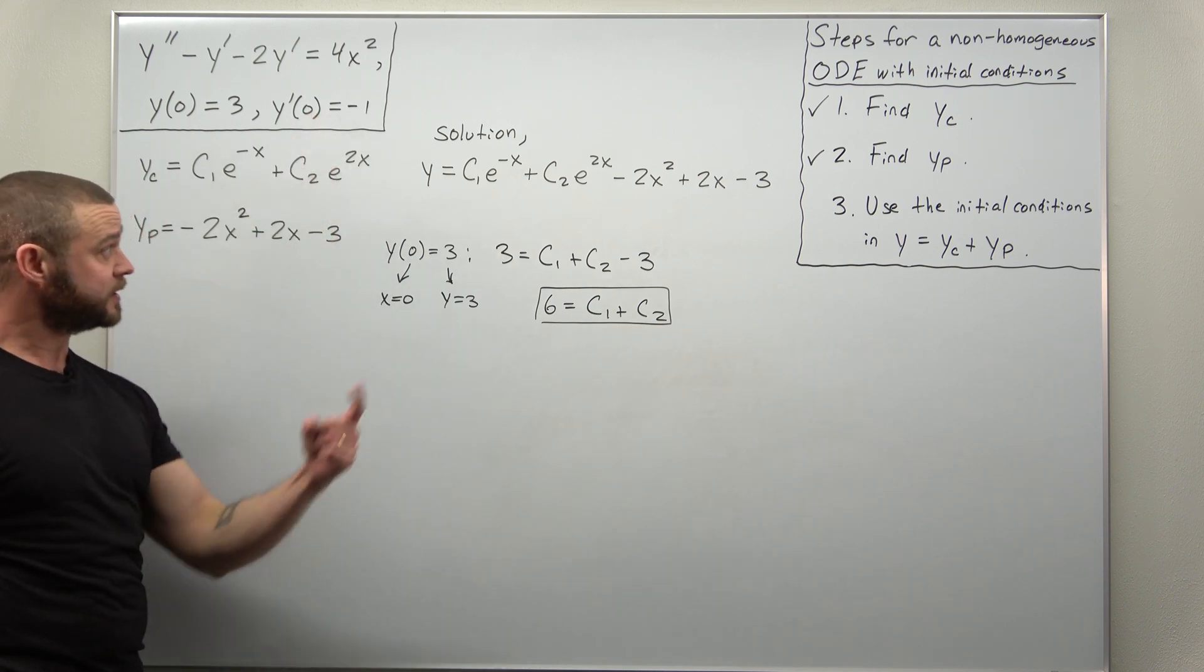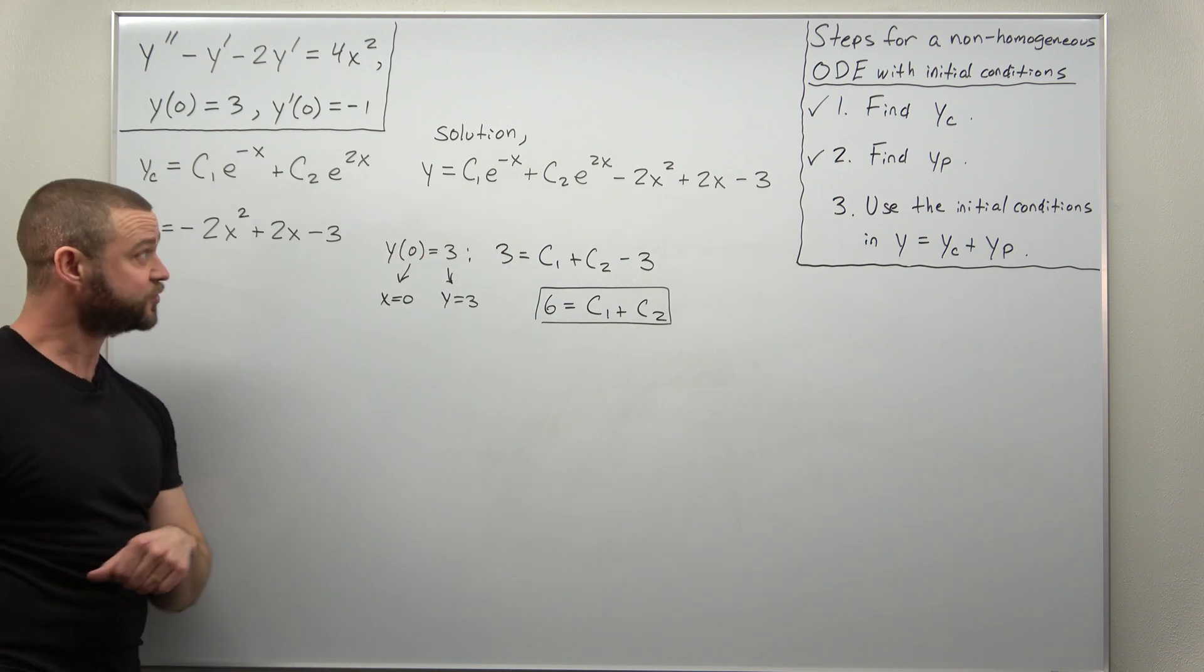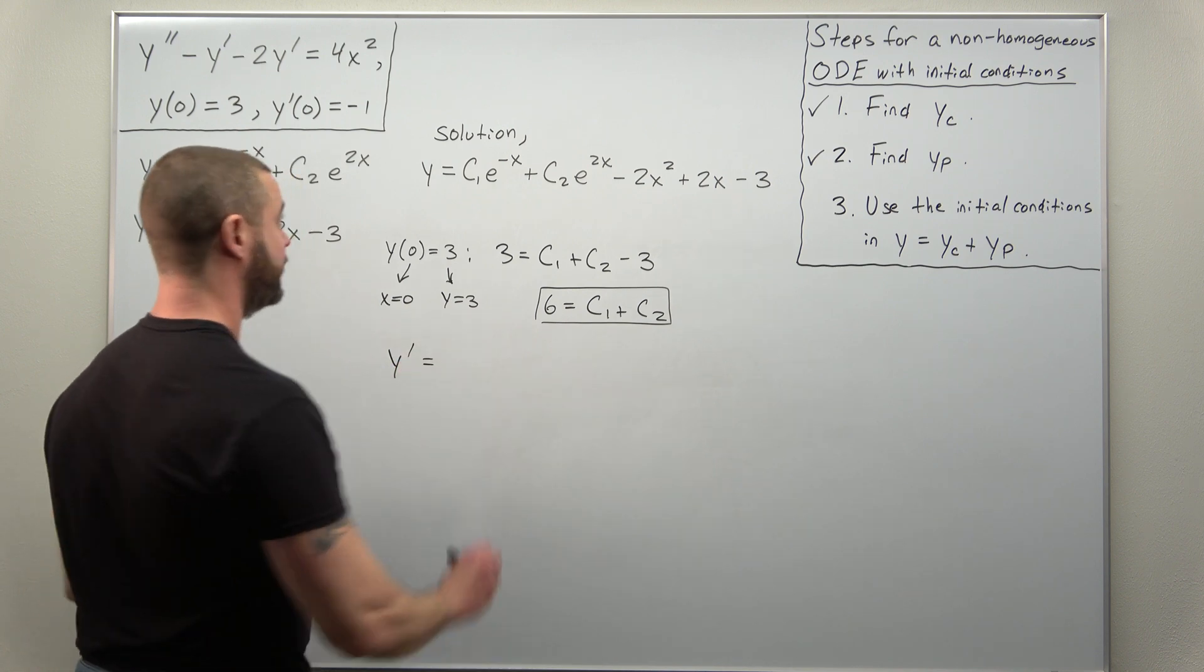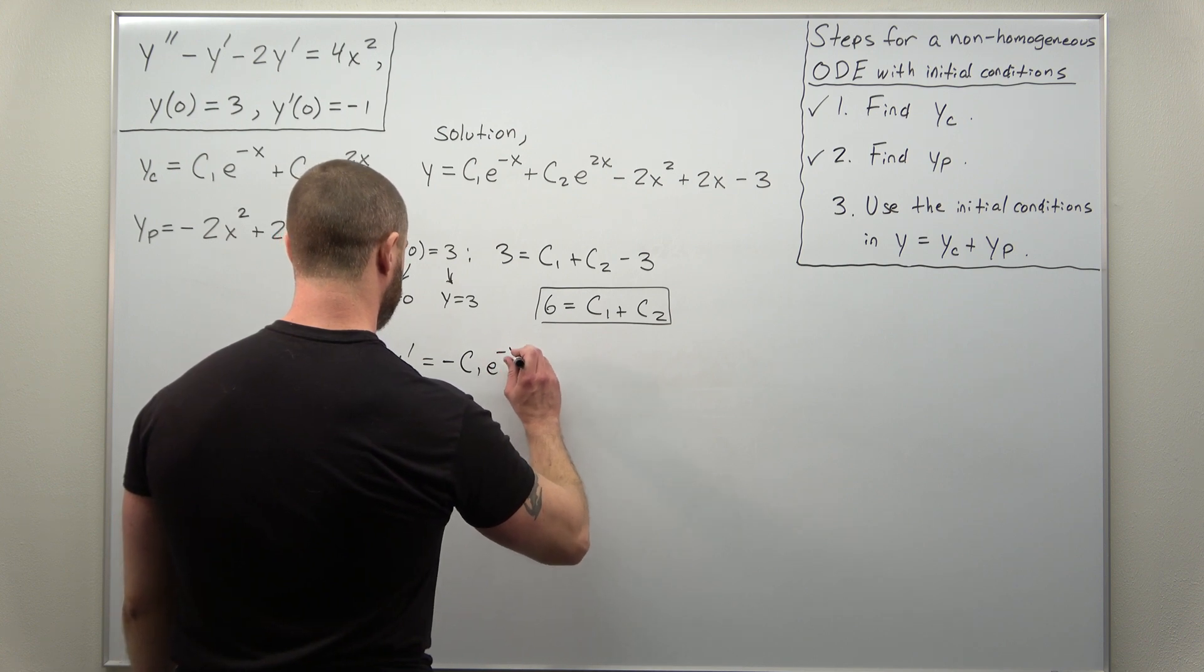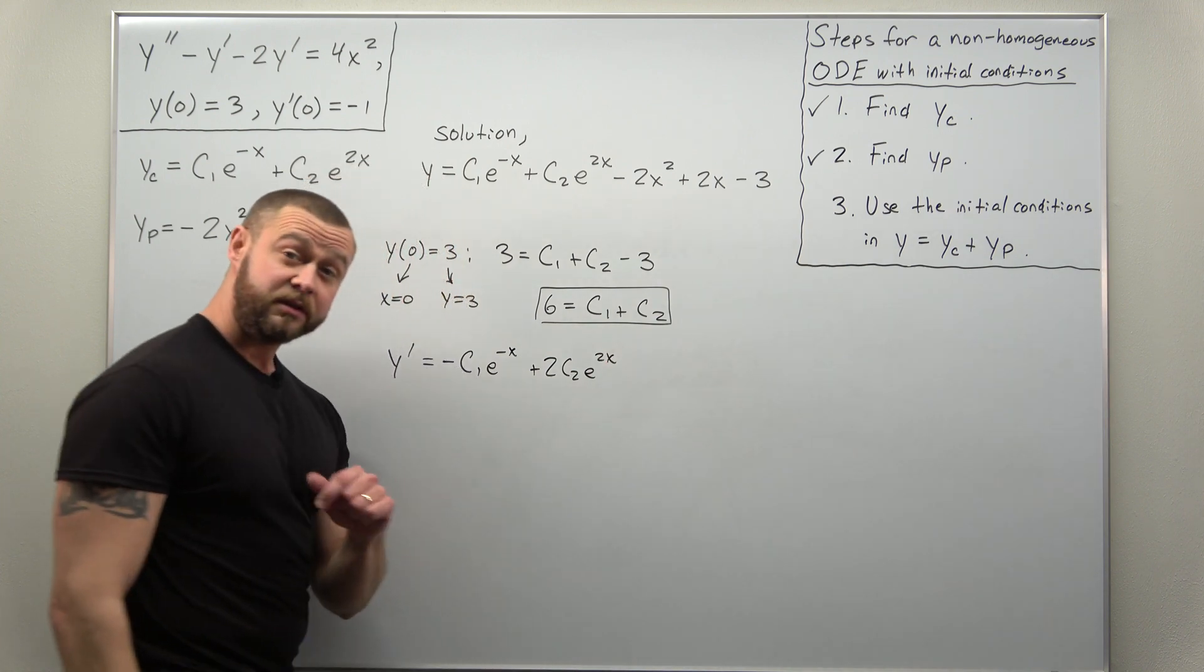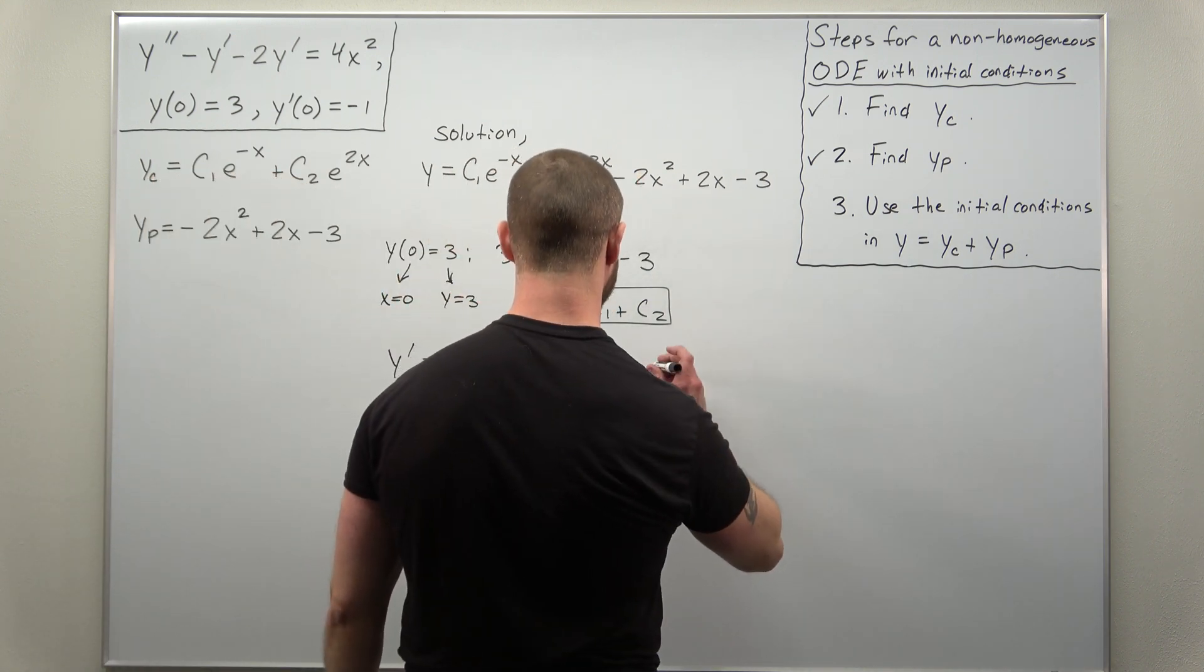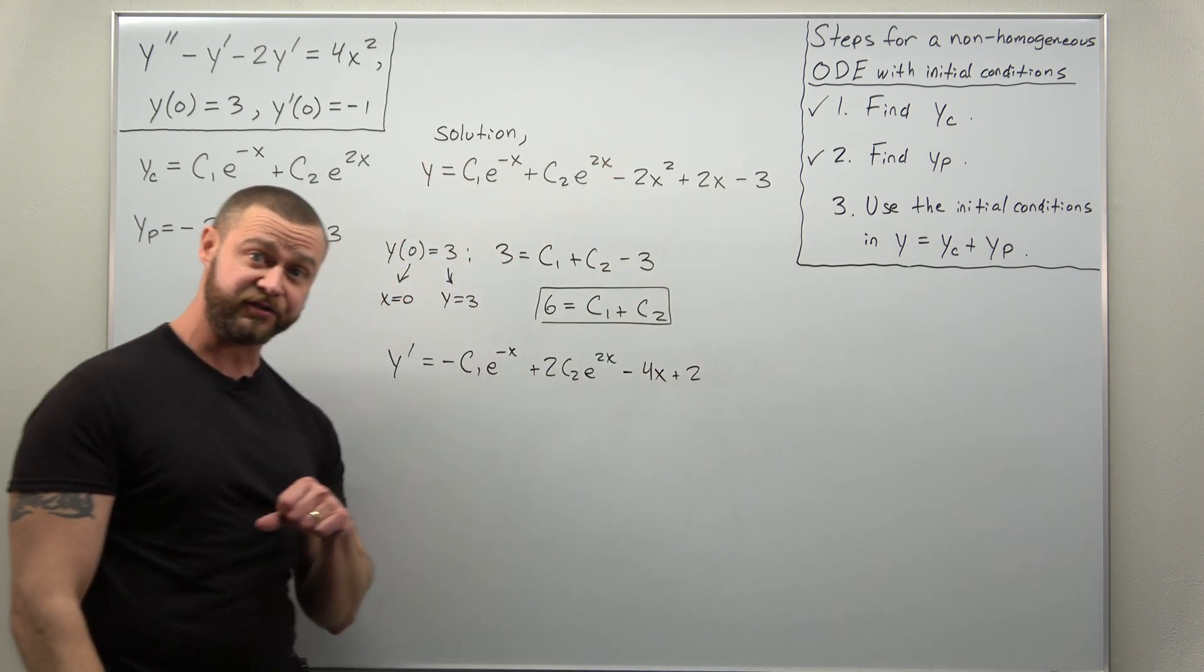To make use of the derivative initial condition, we're going to calculate the derivative of Y. That should be pretty straightforward. Just really using the chain rule here for E to the 2X and E to the negative X. So if we go ahead and do that, it looks like we should get negative C1 E to the negative X plus 2C2 times E to the 2X. And don't forget to differentiate the terms from your particular solution. We get minus 4X plus two and then the negative three that differentiates to zero.